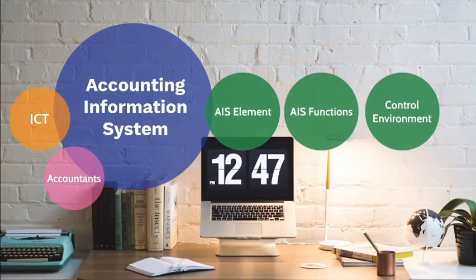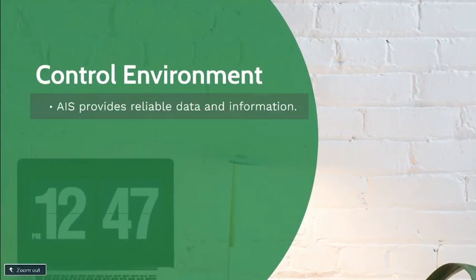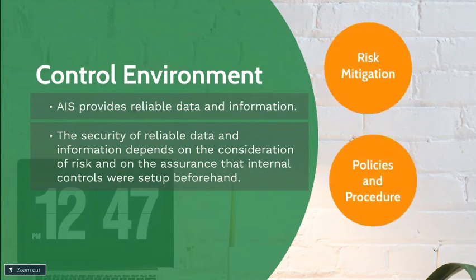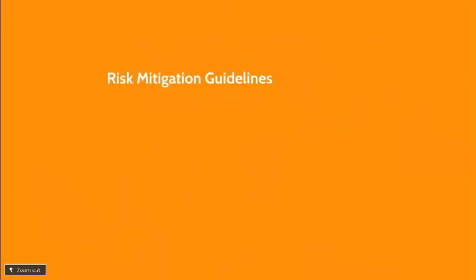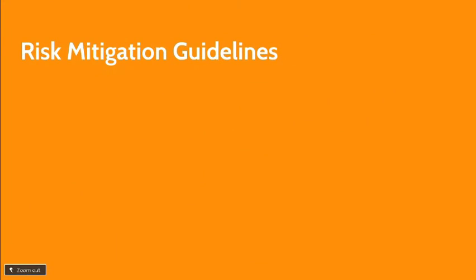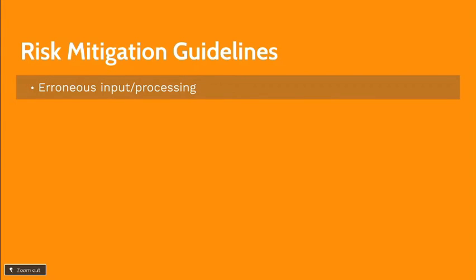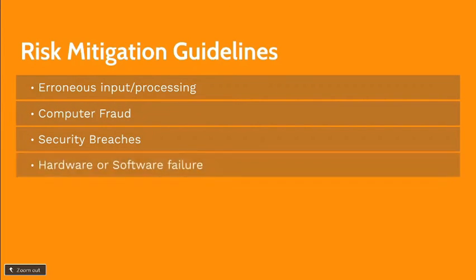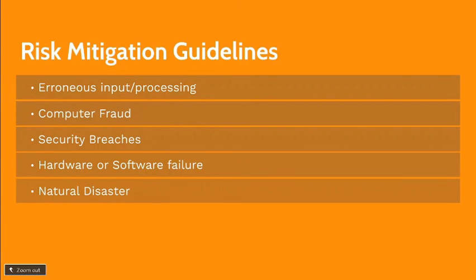In the accounting information system control environment, AIS provides reliable data and information. The security of reliable data and information depends on the consideration of risk and on the assurance that internal controls were set up beforehand. In risk mitigation, organizations must identify risks such as: errors in input or processing, computer fraud, security breaches, hardware and software failure, and natural disasters.